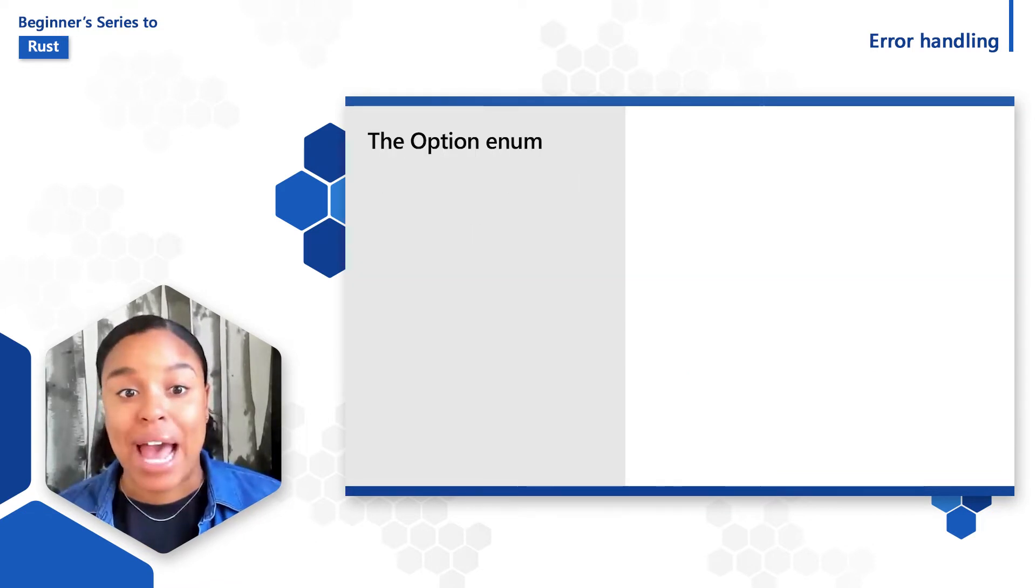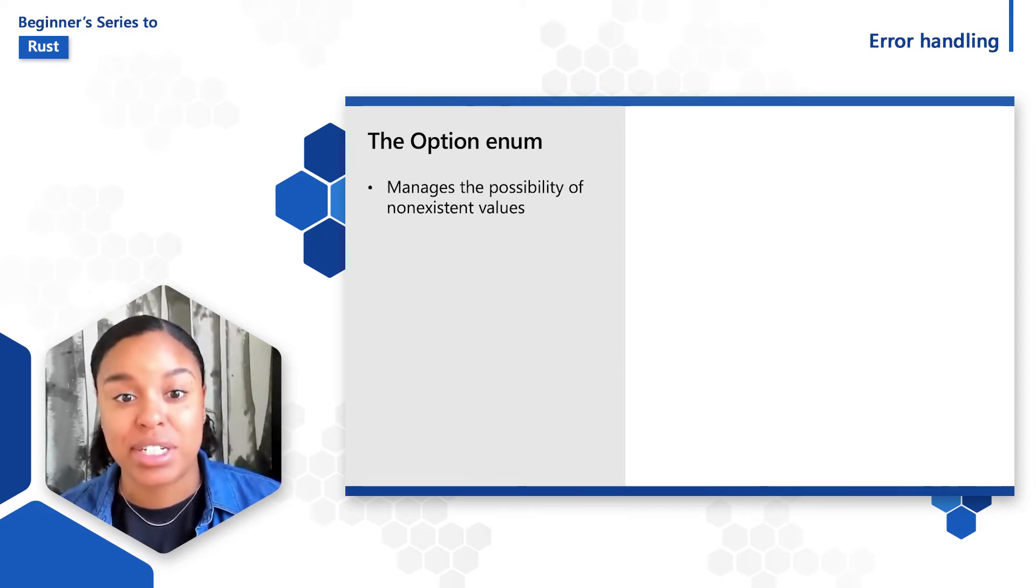Many errors aren't so bad that the program needs to stop and panic. Maybe you encounter a recoverable error where you need to handle the absence of values. The option T enum, as introduced in the enum video, manages the possibility of a null or non-existent value.